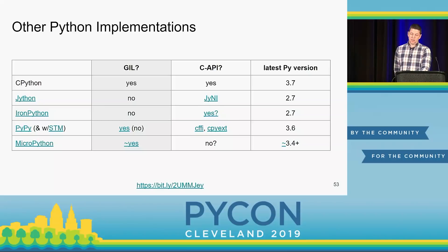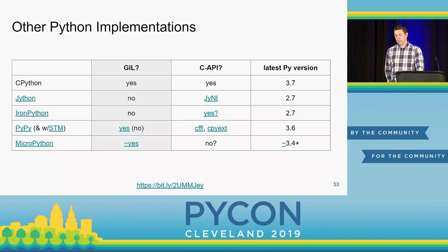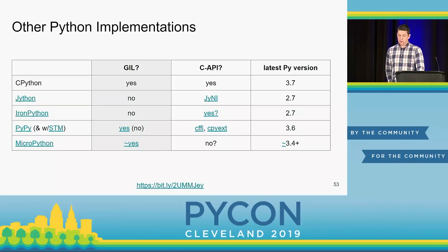CPython isn't the only Python implementation, and sometimes we forget about that. Some of the others — like Jython and IronPython — don't have a GIL. They already support multi-core Python code. They aren't up to maybe the Python version that you want, but you can always help out. Sometimes it's worth diving in to see what you can do to help these tools, and then you can take advantage of them.